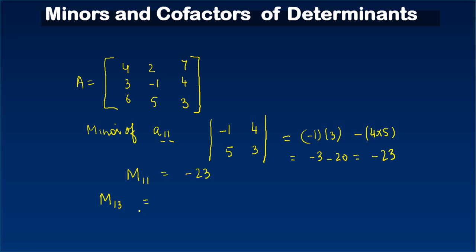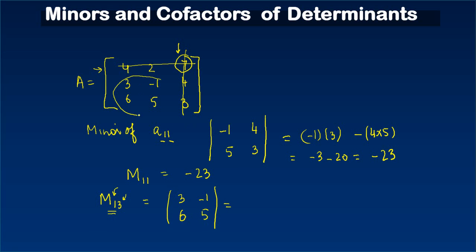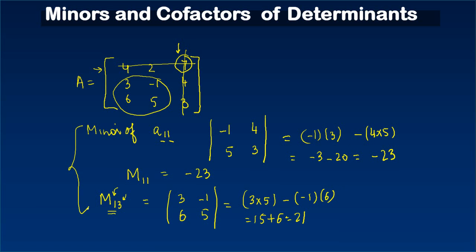Similarly, to calculate M₁₃ — first row, third column — eliminate the first row and the third column. What remains is [3, 6; -1, 5]. The determinant is (3)(5) − (-1)(6) = 15 + 6 = 21. So the minor M₁₃ equals 21.